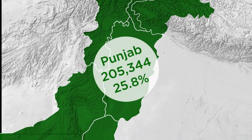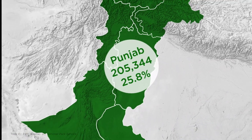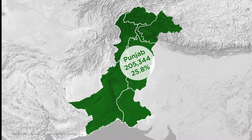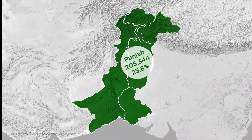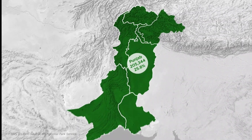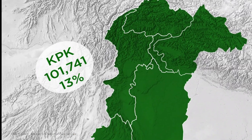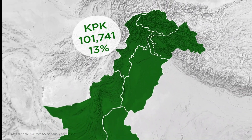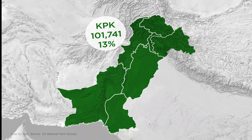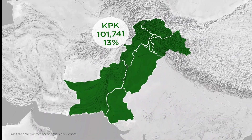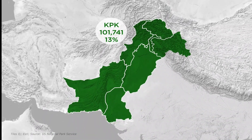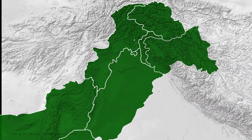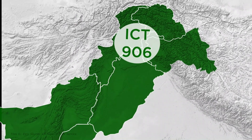Punjab's total area is 205,344 square kilometers, which is 25.8 percent of the total area. KPK's area is around 101,741 square kilometers, which is 13 percent of Pakistan's total area, after the FATA merger.